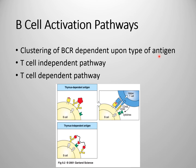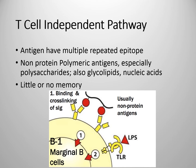Not all types of antigens can result in clustering of B cell receptors. Therefore, B cell activation pathways are of two types: T cell independent pathways and T cell dependent pathways. In T cell independent pathways, the antigen itself is able to cause BCR clustering and initiate B cell proliferation and differentiation, so they do not require the help of T cells. That's why it's called the thymus independent pathway.